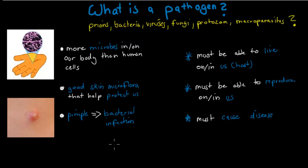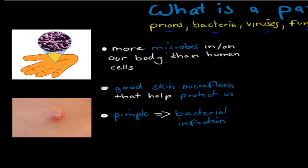But what is a pathogen? You might think: prions, bacteria, viruses, fungi, protozoa, macroparasites — all of these would be examples of pathogens, and you'd be partially correct. The thing is, we actually have more microbes in or on our body than we have human cells. And obviously, not all of those microbes are causing diseases or problems, which means they're not all classified as pathogens.